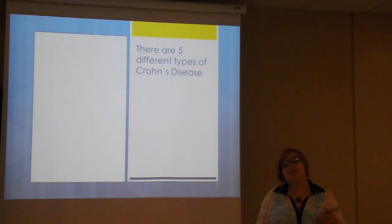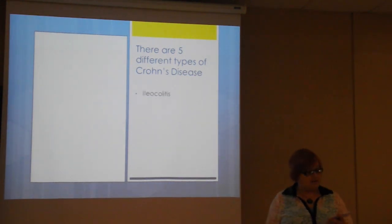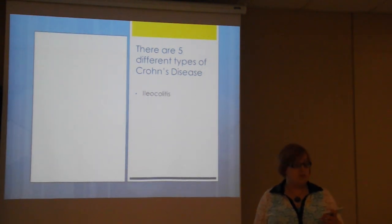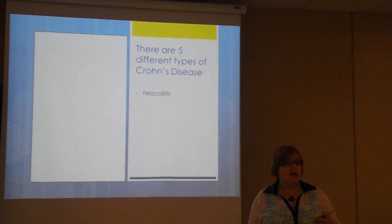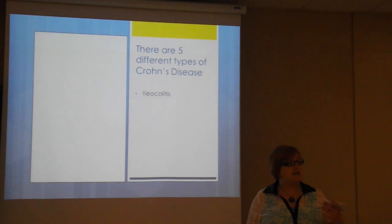There are five different types of Crohn's disease. Iliocolitis is the most common form, affecting the ilium and the colon. The symptoms include diarrhea, cramping, pain in the right lower or middle area of the abdomen, and it's also accompanied by significant weight loss very quickly.